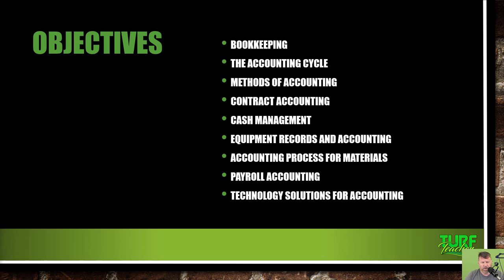Our objectives: we're going to talk about bookkeeping, the accounting cycle, methods of accounting, contract accounting, cash management, equipment records and accounting, the accounting process for materials, payroll accounting, and technology solutions for accounting. Technology can be analog — good old handwritten filing and paper systems — or digital. Either way is fine; just whichever works for you, but know that there's technology for both.